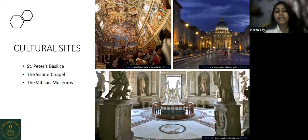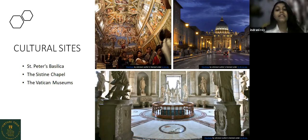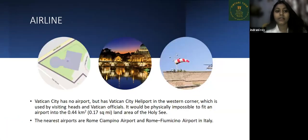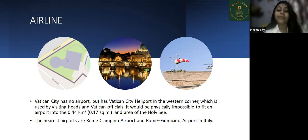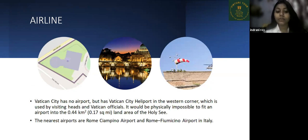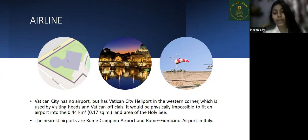The cultural sites include St. Peter's Basilica, the Sistine Chapel, and the Vatican Museums, which you can see in the pictures. Regarding airlines, Vatican City has no airport, but has a Vatican City heliport in its western corner, used by visiting heads of state and Vatican officers. It would be physically impossible to fit an airport into the 0.44 square kilometer land area. The nearest airports are Rome Ciampino Airport and Rome Fiumicino Airport in Italy.